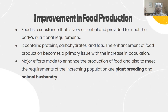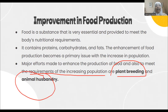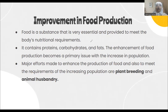Efforts are being made to meet the requirements of the increasing population through methods like plant breeding and animal husbandry. It's not only plant produce that is enhanced for more food quantity - animal husbandry is also parallelly enhanced for those who consume meat. In this video, we will mostly be talking about plant breeding.